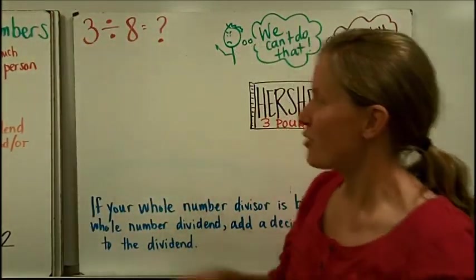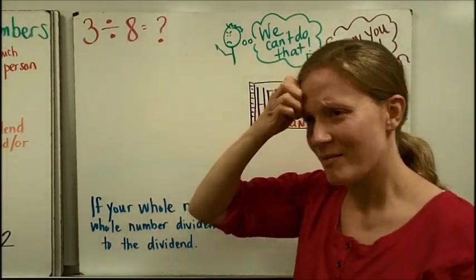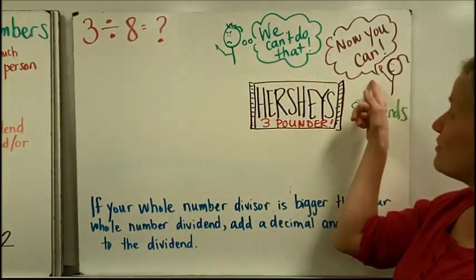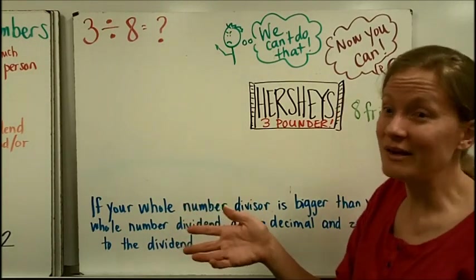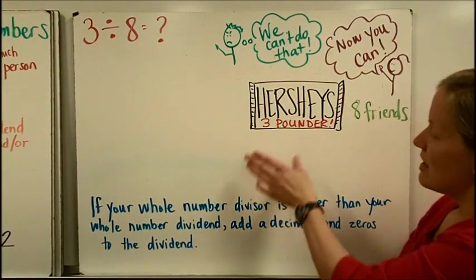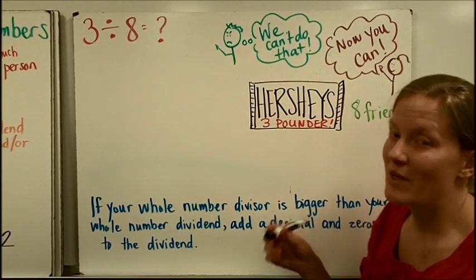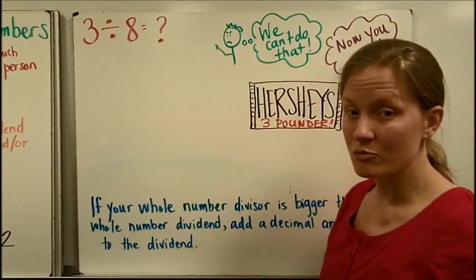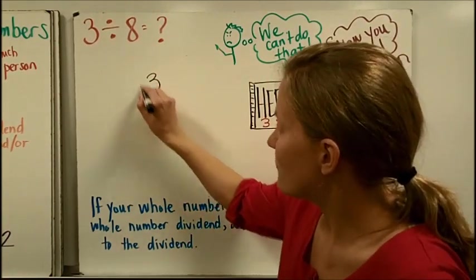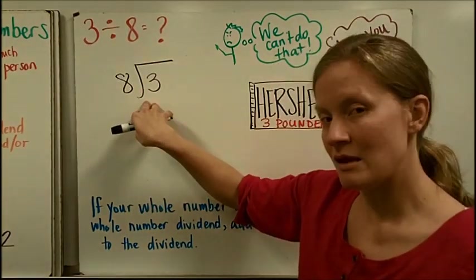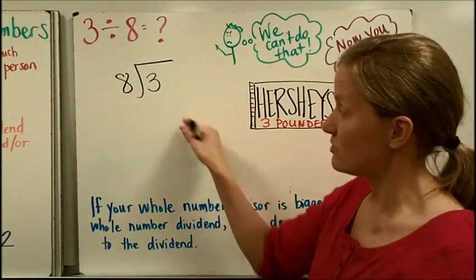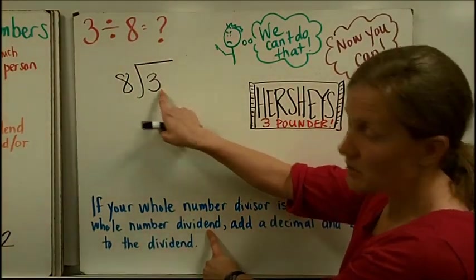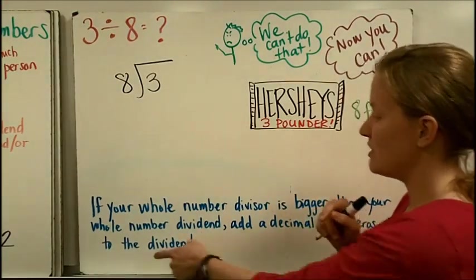One final example. I like this kind of problem. 3 divided by 8. Many times fourth graders see that problem and go, we can't do that. Because our divisor is bigger than our dividend. Well, here I am now telling you that you definitely can do this problem. Because you know how to divide decimals now. So here's an example of where you would do 3 divided by 8. Let's say you got this humongous Hershey's chocolate bar that was 3 pounds. And you had 8 friends that wanted to share it. Well, you're going to have to divide your 3 pounds evenly into 8 groups. So let's do it. This is 3 divided by 8. So I just took it and wrote it the correct way that we know the order a division problem goes in. So now, if your whole number divisor, that's the 8, is bigger than your whole number dividend. That's the 3. So this is bigger than this. Add a decimal and zeros to the dividend.